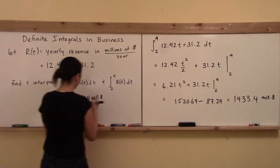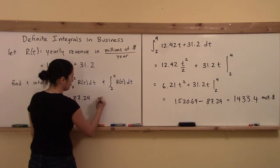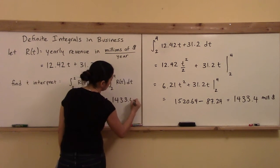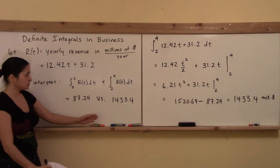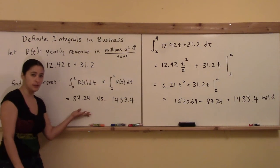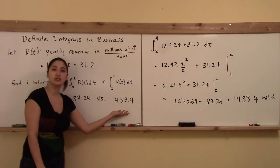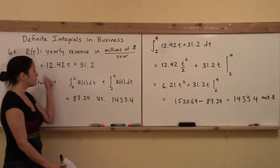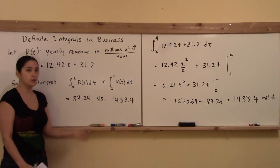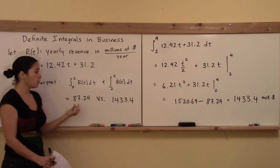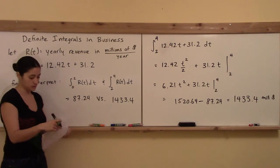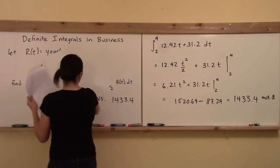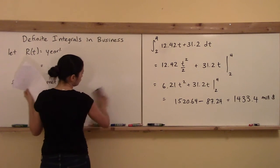Comparing the two: the first integral gave 87.24 million dollars and the second gave 1433.4 million dollars. So in the first two years we made out pretty good, and in the next two years we made out even better. This confirms what we saw by graphing the rate of change and considering the area under the curve over both intervals.